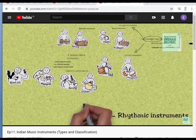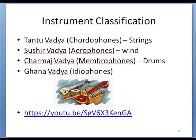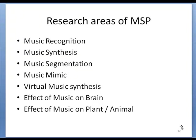From this video, we come to know there are four types of classification of instruments. Now, why do we need to do research in the area of music signal processing? What are the problems? First is music recognition. Second is synthesis of music, maybe in different instruments or different ragas or combinations. And if the input is music, how can you segment it — the segmentation of a music?